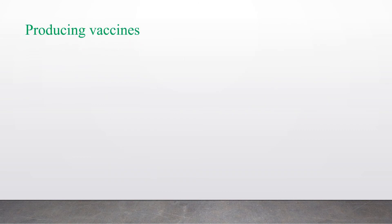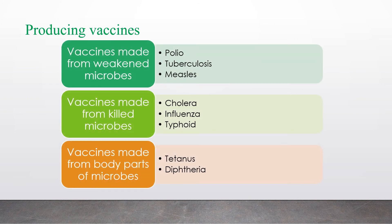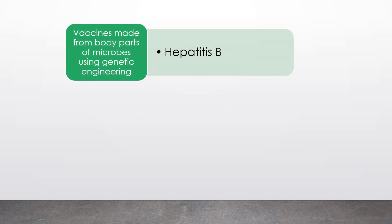The next application in the medical field is producing vaccines. We can produce vaccines from weakened microbes — examples are polio, tuberculosis and measles vaccines. We can also produce vaccines from killed microbes, such as cholera, influenza and typhoid vaccines. Vaccines can also be produced from body parts of microbes, like tetanus and diphtheria vaccines. Using genetic engineering, vaccines can be produced from body parts of microbes, with hepatitis B as an example.